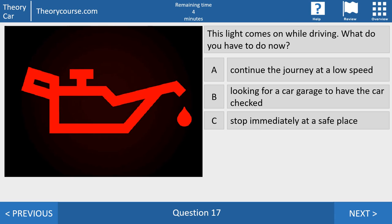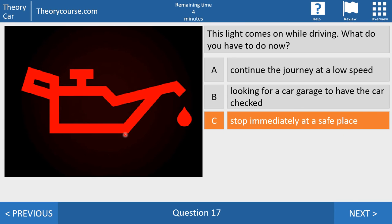Question 17. This light comes on while driving. What do you have to do now? Answer A. Continue the journey at a low speed. Answer B. Looking for a garage to have the car checked. Answer C. Stop immediately at a safe place. And I told you two minutes before. If there is a red symbol at your dashboard and the CBR asks what should you do? You have to stop immediately at a safe place.